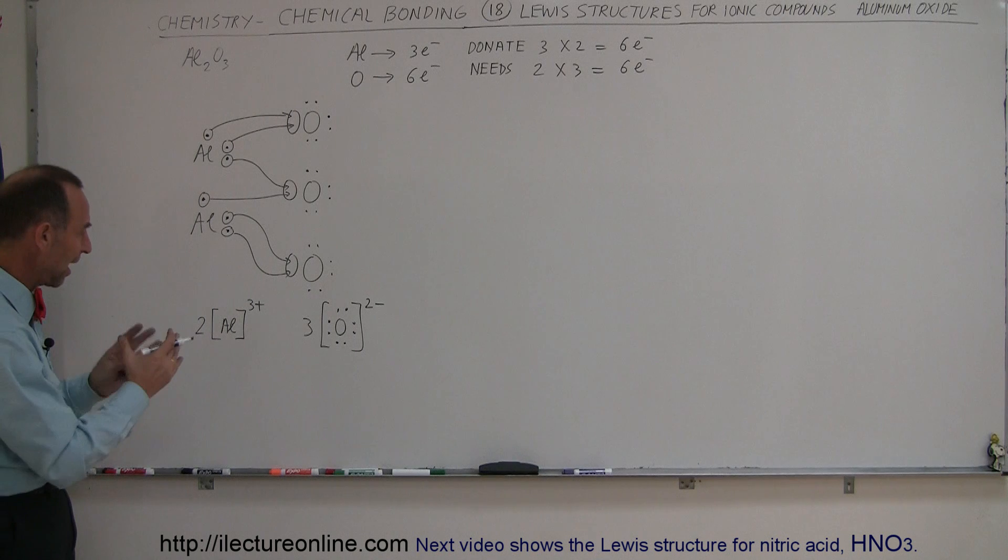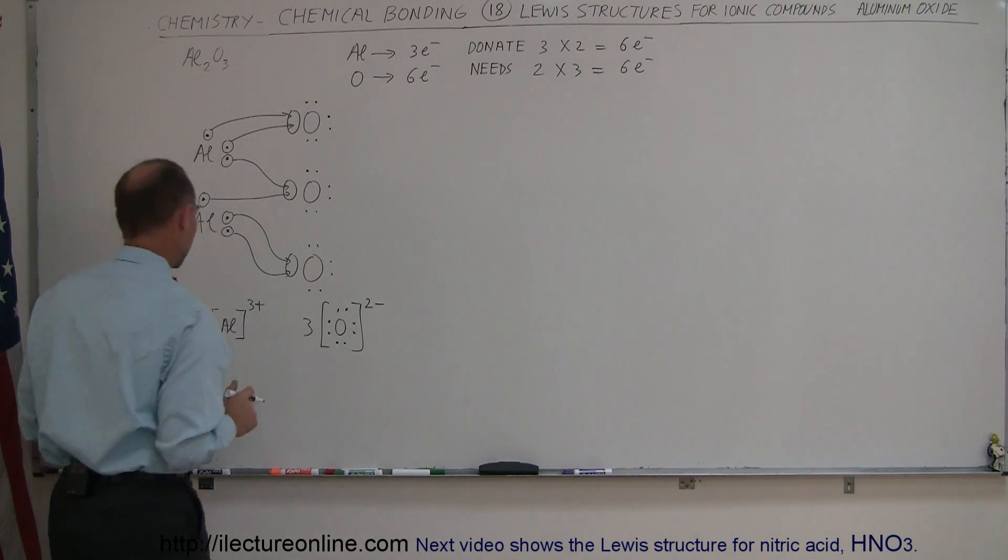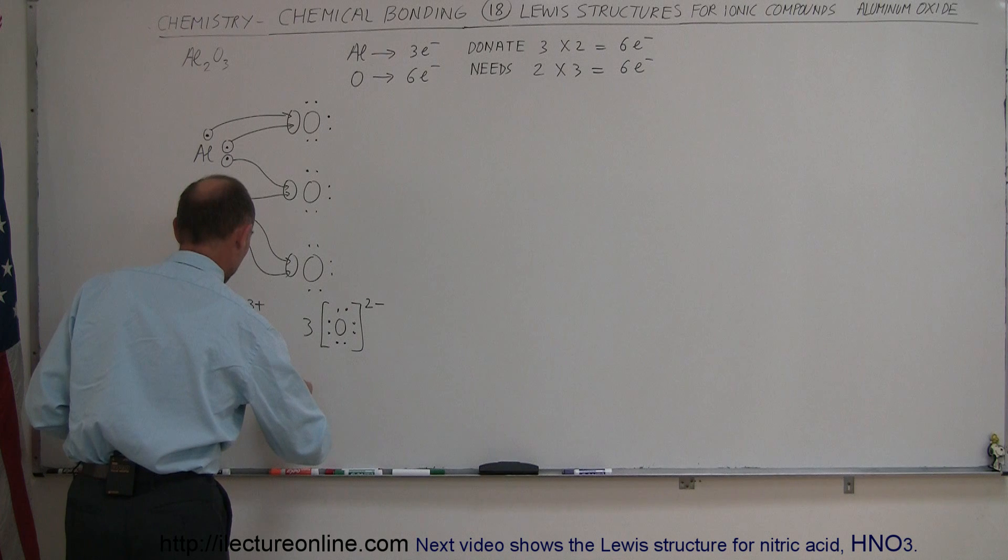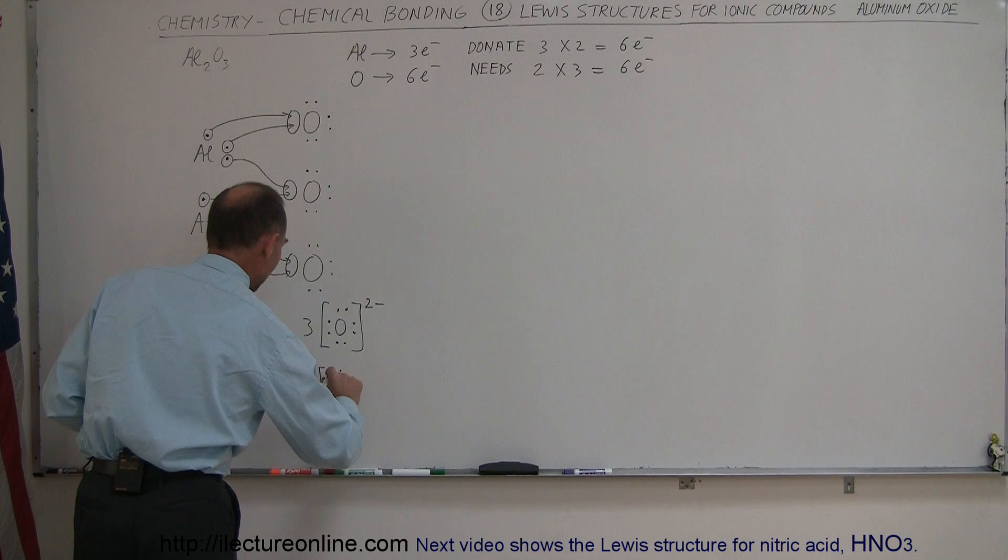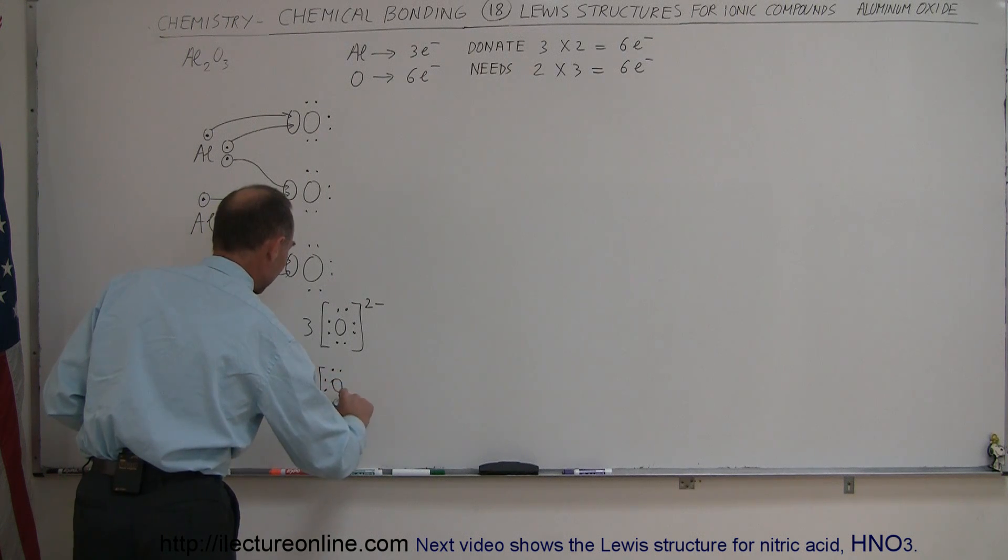And then when you put those together you now have a Lewis structure of that particular ionic compound so we have two aluminums that are three plus and three oxygens with the valence electrons indicated like this which have a charge of two minus.